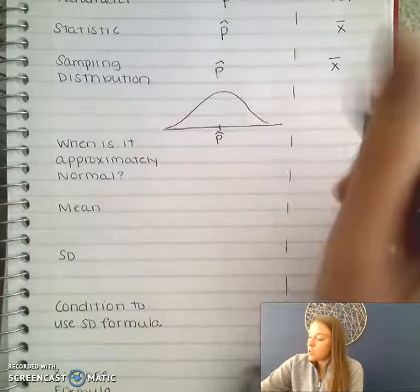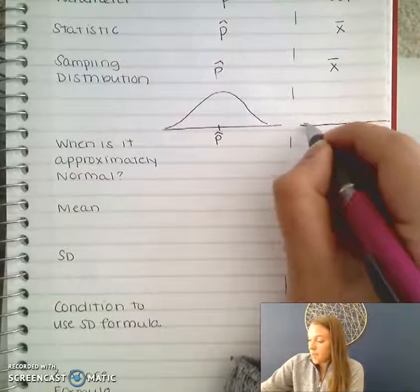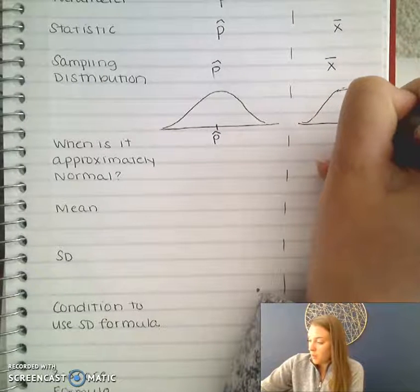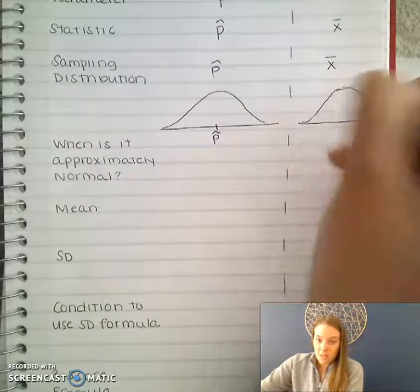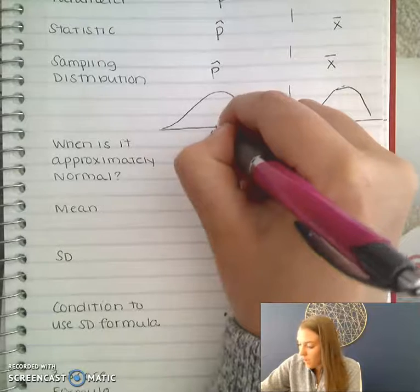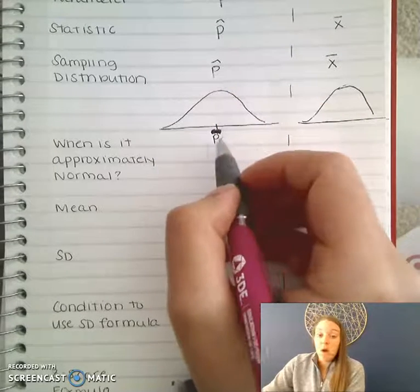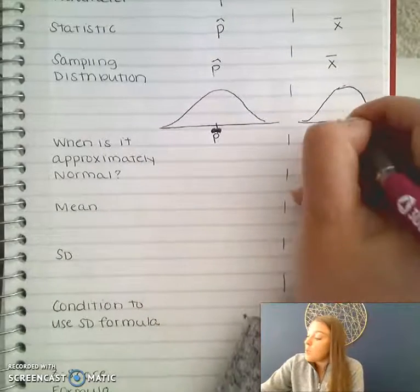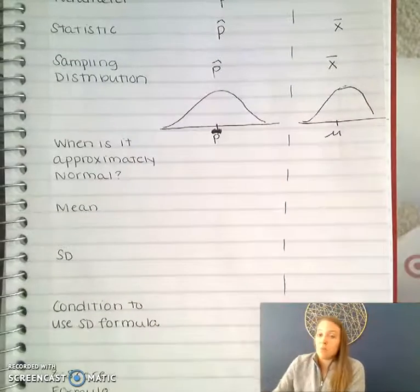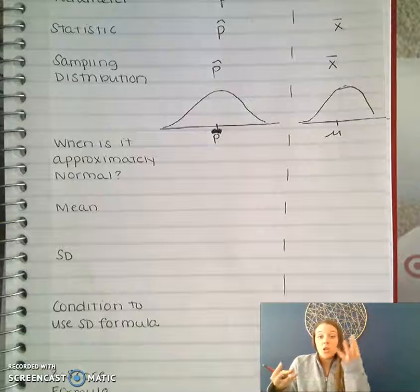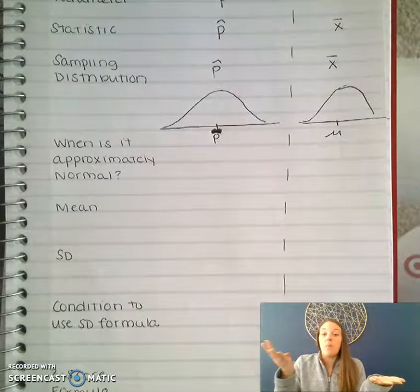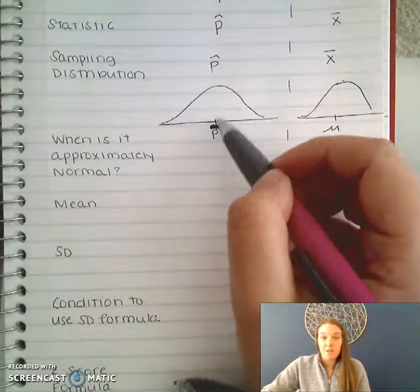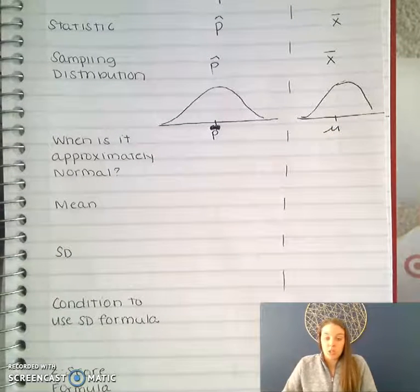The sampling distribution for x-bar is the same, but I need to correct myself — the center shouldn't be p-hat, it should just be p, so the population proportion is the center of your data. For means, the population mean would be the center of your data, because your samples should be representative of your population — you'd want most of your samples to have the same mean value as your population.